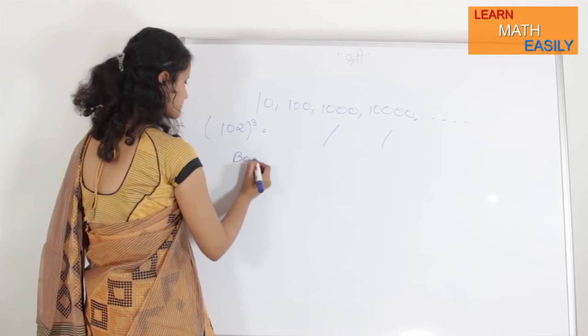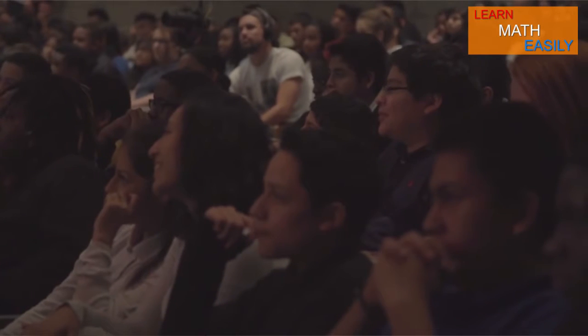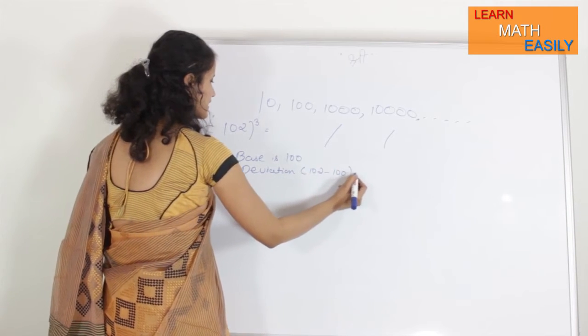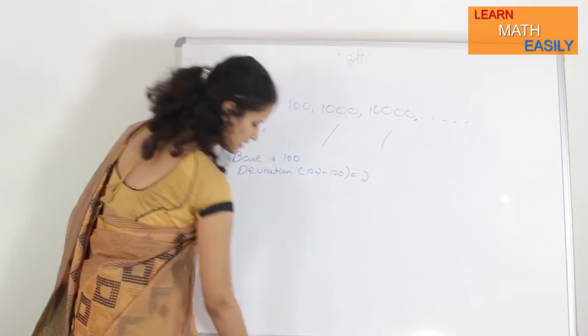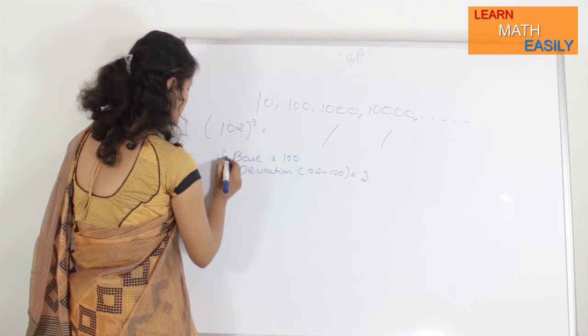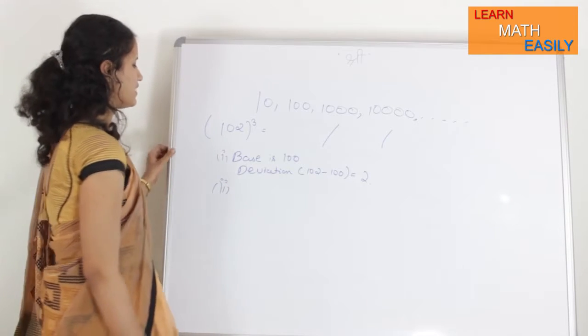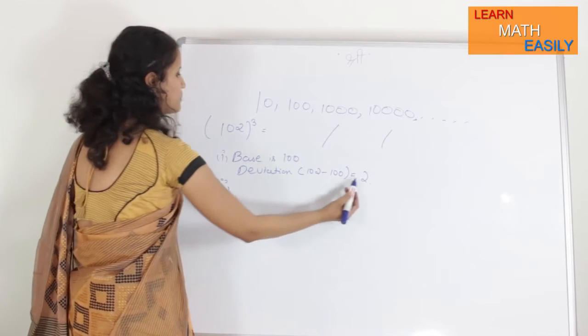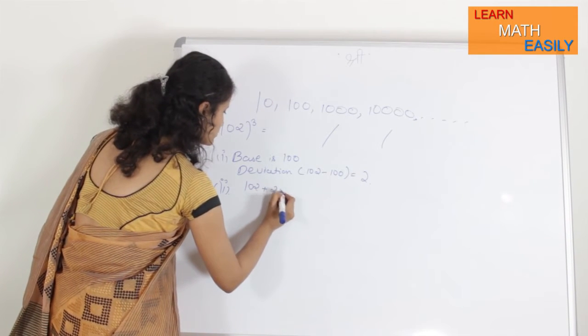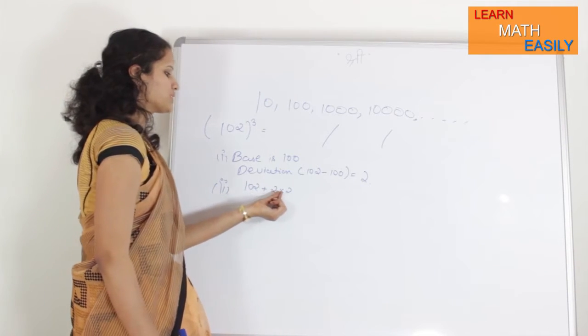So, deviation will be 102 minus 100 that is equal to 2. Now, what I will do is, in next step, this is my first step, this is the next step, what I am going to do is, I will add 102 plus 2 times its deviation, means number plus 2 times its deviation.